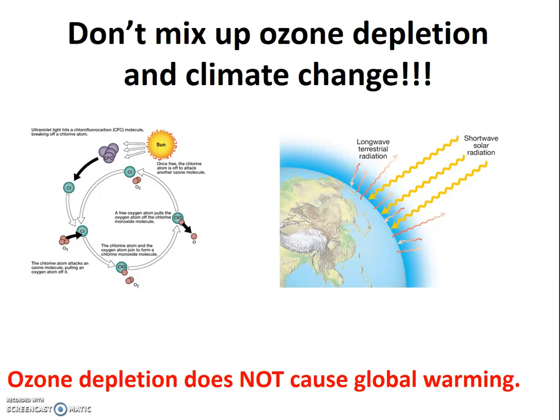Importantly, ozone depletion does not cause global warming or climate change. You should say this aloud to yourself: ozone depletion does not cause climate change. Many students incorrectly assume that additional ultraviolet radiation that gets through because of ozone depletion is what causes the troposphere to warm. This is not true. The additional ultraviolet radiation can harm us — for example, we can get skin cancer, cataracts, etc. — and it can harm photosynthetic organisms. But this small addition of UV radiation does not impact global temperatures.